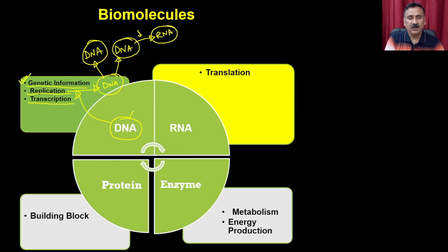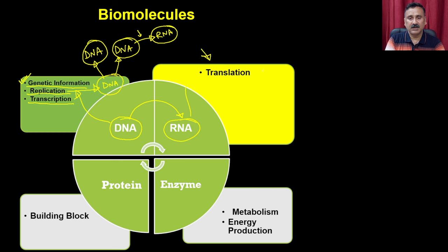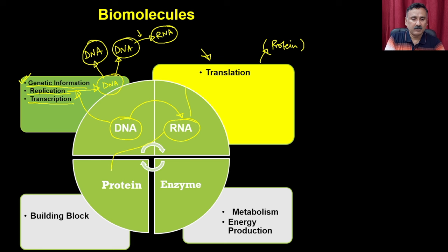Once RNA (ribonucleic acid) is synthesized from DNA, it participates in translation, which is responsible for production of protein. RNA alone is not sufficient; it requires the help of ribosomes and other protein molecules, and ultimately produces protein. Protein is very important because it is a building block for most biological systems.